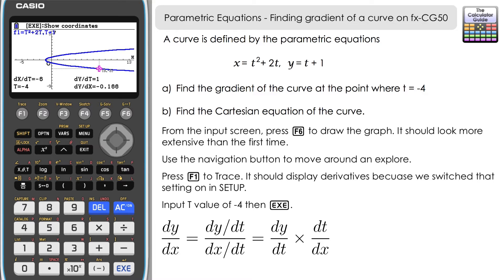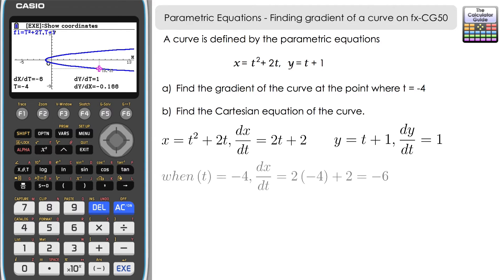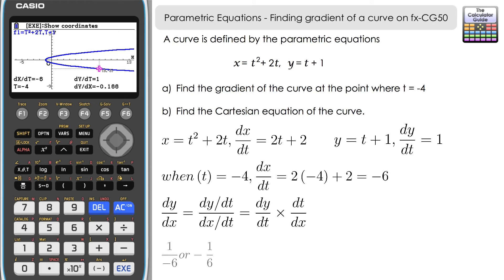We should provide algebraic evidence too. dx/dt equals 2t plus 2, and dy/dt equals 1 (the derivative of t plus 1). When t equals minus 4: dx/dt equals 2 times minus 4 plus 2 equals minus 8 plus 2 equals minus 6. So dy/dx equals 1 over minus 6, giving the gradient of the curve as minus one sixth, or minus 0.166 as a decimal approximation to three decimal places.